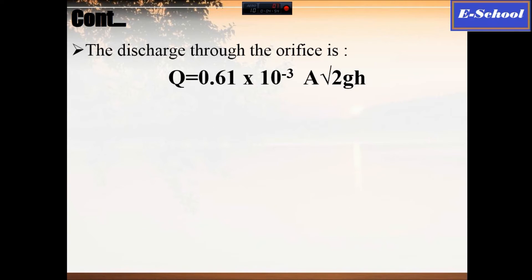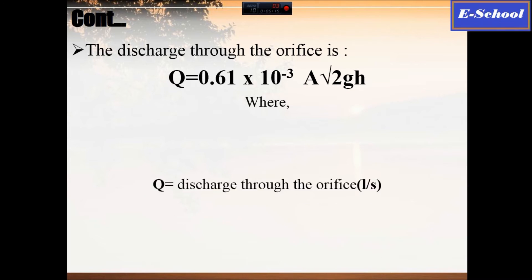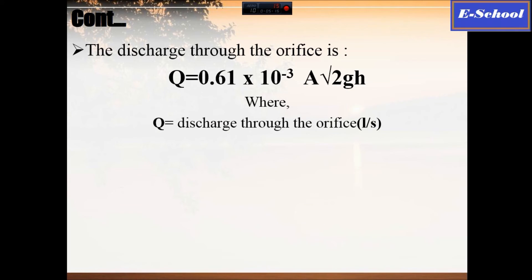The discharge through an orifice is given by Q equals 0.61 multiplied by 10 raised to the power minus 3, times A, times the square root of 2gh. The description of the variables is given on the slide.